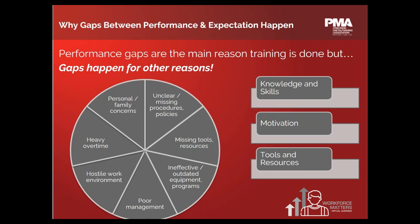When someone is not performing as expected, training is the most common solution presented. The starting point for an intervention is to identify the types of skills, knowledge, and behaviors people need to be effective. When you assess the level of skills people have today, then determine the levels they need — now and in the future — you can identify the gaps. A gap between desired and actual performance can be caused by a lack of competence or skill, which can be addressed by training.